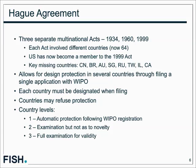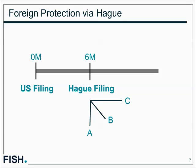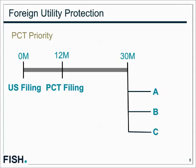The agreement has three levels. Level one countries protect the design immediately upon registration. Level two countries do their own formality review but will not examine the design to see if it's new. Level three countries do a full validity examination. The US has signed on as a level three country. Via the Hague, you'd have the US filing, then a six-month priority window to file with the Hague. Level one countries would be protected upon registration, while level three countries would be notified and have up to 12 months to refuse.